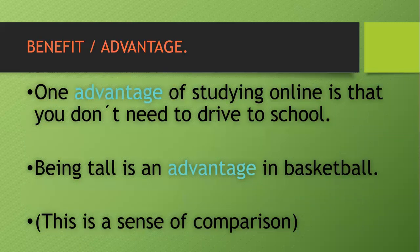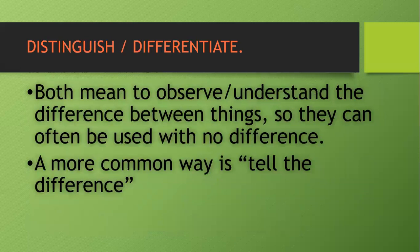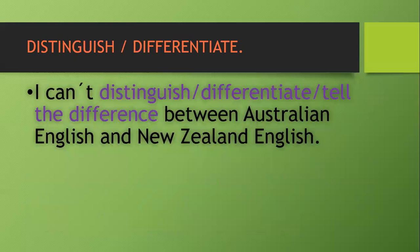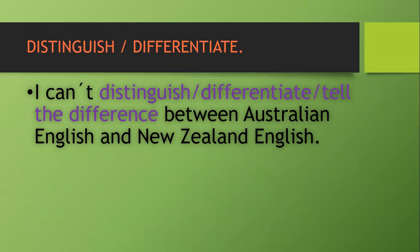Let's see. Distinguish and differentiate. Both mean to observe, understand the difference between things. So they can often be used with no difference. A more common way is to tell the difference. For example, I can distinguish, differentiate, tell the difference between Australian English and New Zealand English.